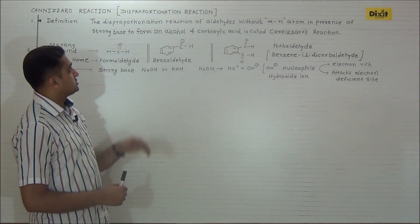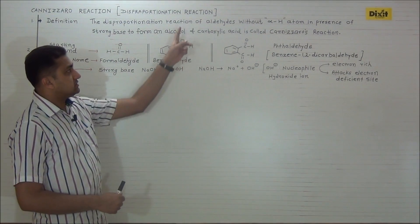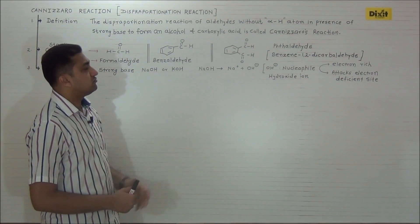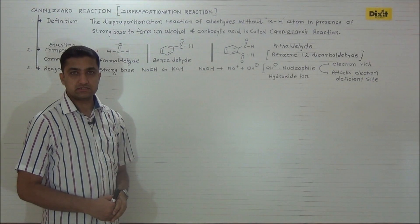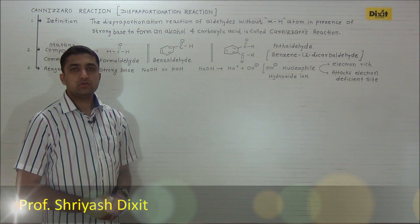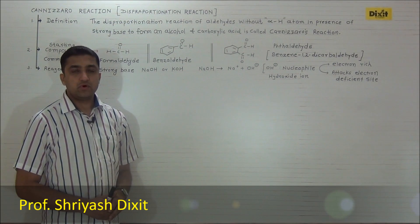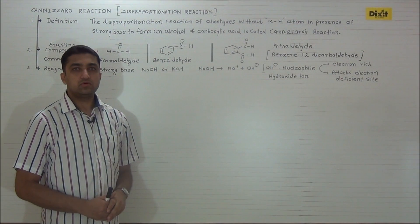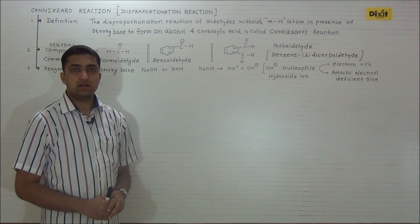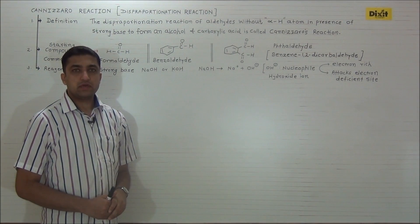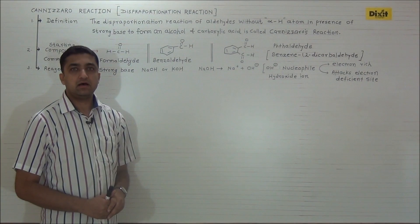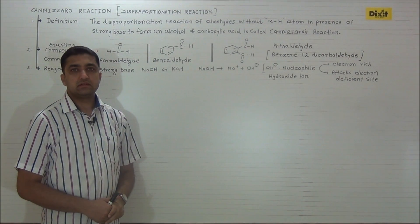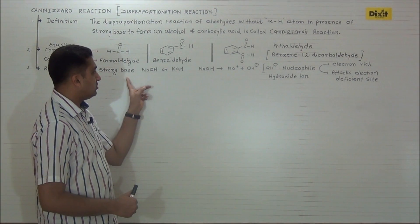Cannizzaro reaction or disproportionation reaction is the reaction of aldehydes without alpha hydrogen atom in presence of strong base to form an alcohol and carboxylic acid. In Cannizzaro reaction two molecules of aldehyde are involved: one molecule undergoes oxidation to form carboxylic acid and one molecule undergoes reduction to form an alcohol. The basic condition is absence of alpha hydrogen atom.